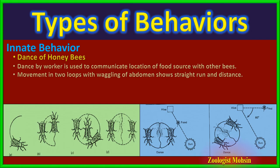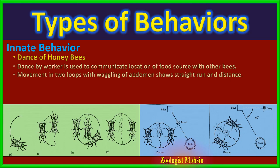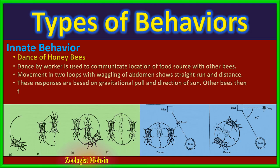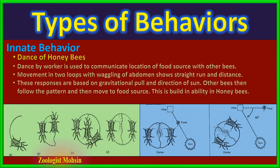If you focus on the right diagram, you get an idea of how the direction of the loops points toward the direction of the food source. Other bees follow the worker and then all move together straight to the food source. This behavior is not learned but built into the genes of every bee, and she can understand the dance by instinct.